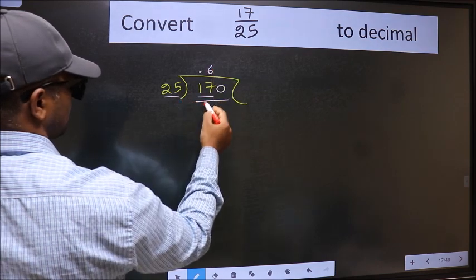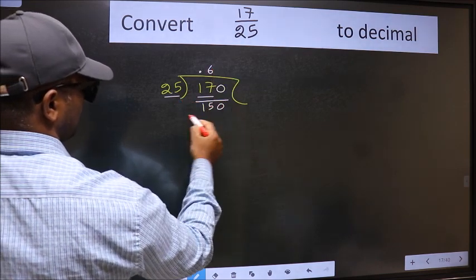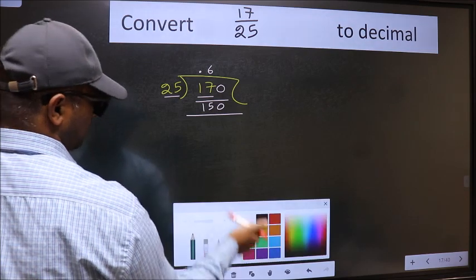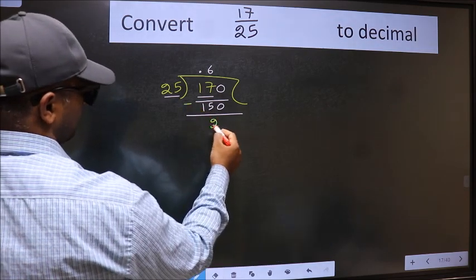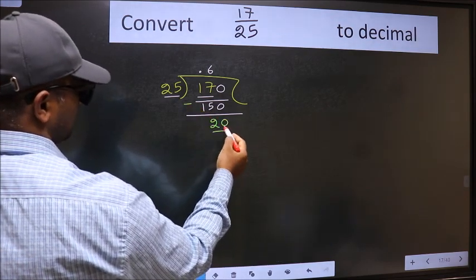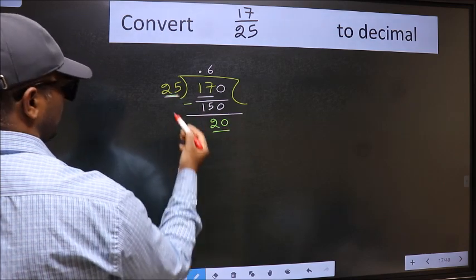Now we should subtract. We get 20. Now here we have 20 and here 25.